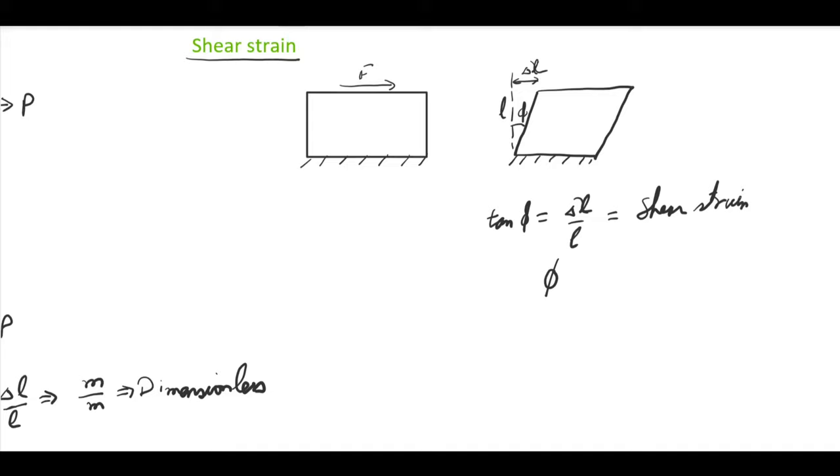It is in radians, so again it is dimensionless. You can define it as the change in the right angle of the element measured in radians. This is how we use the term strain.